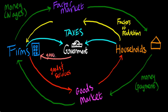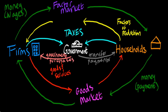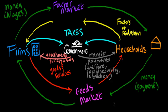However, the government gives that money back to the firms in the form of government purchases of services and goods, and gives it back to the households in the form of transfer payments, such as welfare, social security, or government subsidies. And there you have it — the circular flow diagram.